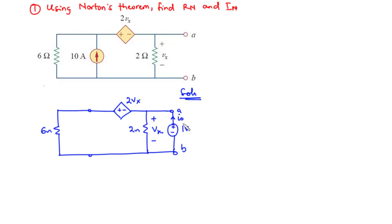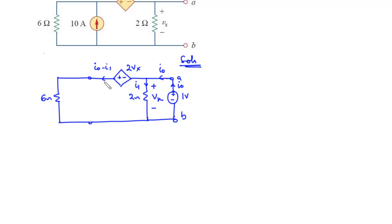We have current I0 flowing in the anti-clockwise direction. If we want to do current distribution, let's assume we have current I1 flowing in this branch. Then we are going to have current I0 minus I1 flowing in the other branch. So let's try to find the value of I1 and then I0.